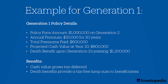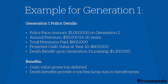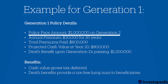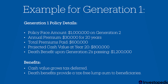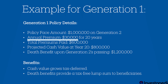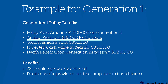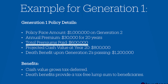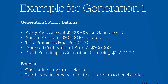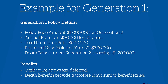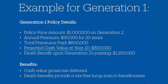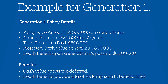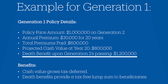For generation one, the policy details involve buying a $1 million face amount policy on generation two. They're going to fund that with about $30,000 a year for the next 20 years. Total premiums put into the policy are around $600,000, but after that 20-year period, the projected cash value inside the plan will be about $800,000. The death benefit will have also been growing across that time, coming in at about $1.2 million.